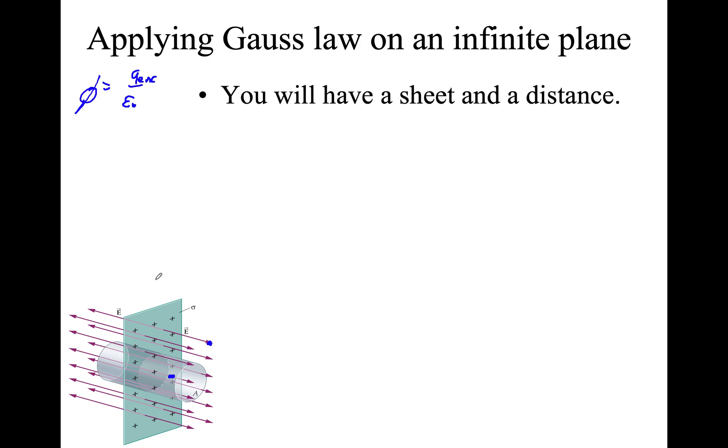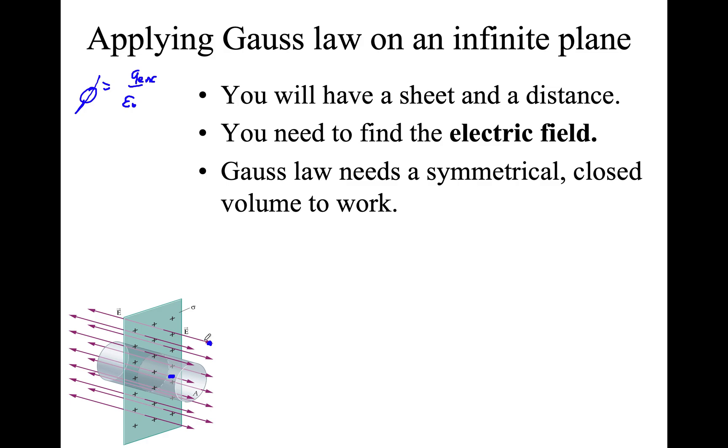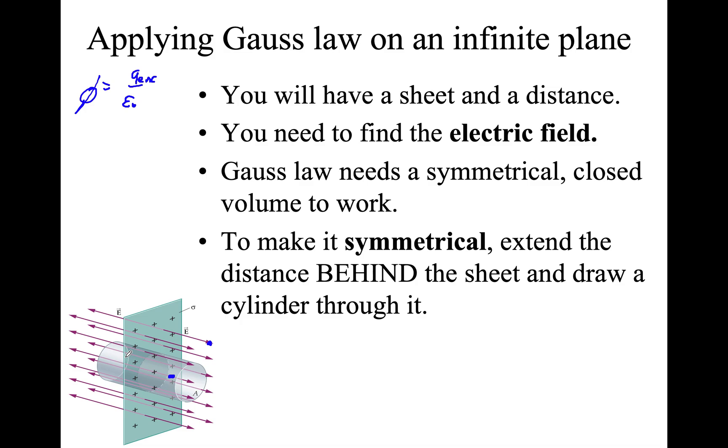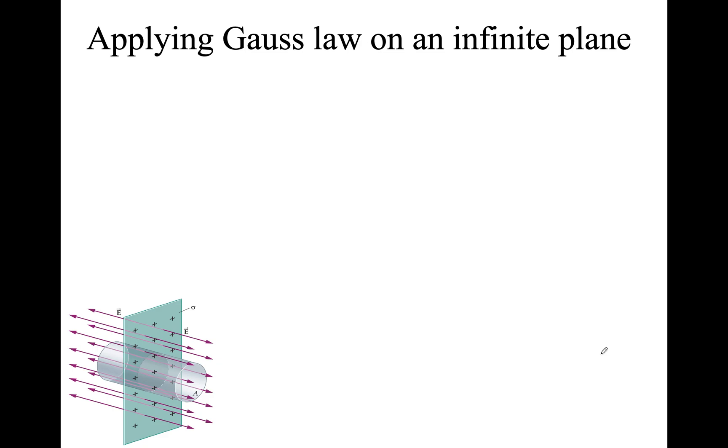You will be given a sheet and a random distance from the sheet. You will be asked to find the electric field for this. We know that Gauss's law needs a symmetrical closed volume to work like we did in the previous lesson. It has to be enclosed and symmetrical will be easier to calculate with. So we can use a cylinder. We'll draw a cylinder and we'll enclose whatever the area is that we're looking for. And it will be in front and behind of the sheet. So we have done that and we have a full cylinder we can start solving. Another reminder for you from the previous video was the charge density is q over area. Because this is a sheet of paper. So it will be q over a.